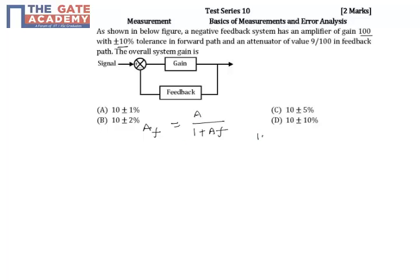First I will find out, because here the gain is 100 plus or minus 10 percent, so that means there is an error due to 100 plus 10 and there is an error due to 100 minus 10. So I have to calculate for these two A values, then that will become the error.